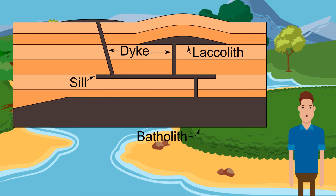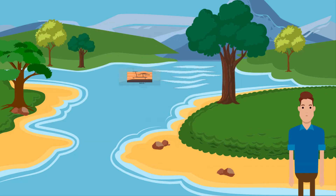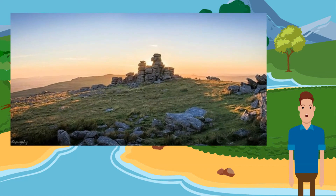Igneous rocks develop underground as a result of intrusive volcanicity. Magma solidifies to form distinctive shapes known as batholiths, dykes, and sills. Dartmoor is an example of a batholith — the granite upland is part of a much larger batholith beneath the earth's surface. Granite forms rugged uplands that are poorly drained with large expanses of moorland; dominant features are tors. Dykes run across rock strata, whereas sills run parallel to them, and sills often form steep valleys.